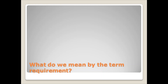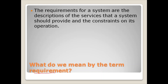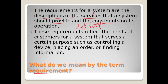What do we mean by the term requirement? In simple words, the requirements for a system are the descriptions of what the services that a system should provide and the constraints on its operation. In some cases, a requirement is simply a high-level abstract statement of a service that a system should provide or a constraint on a system. On the other hand, it is a detailed formal definition of system function. These requirements reflect the needs of customers for a system that is going to serve certain purposes such as controlling a device, placing an order, or finding information.